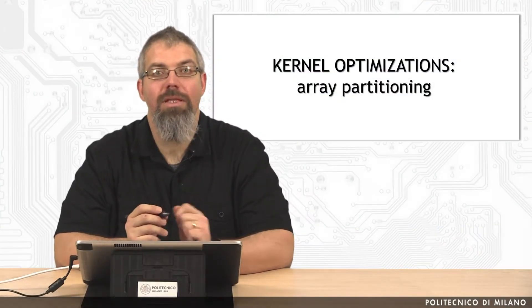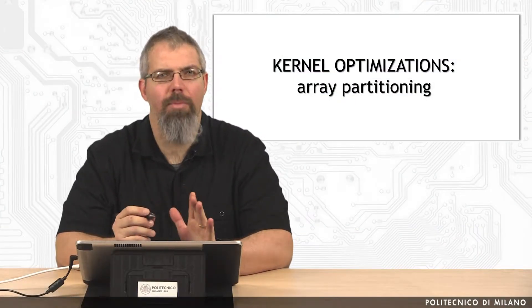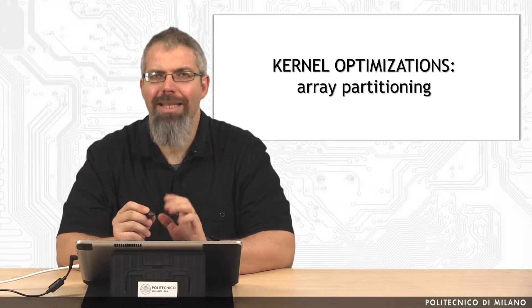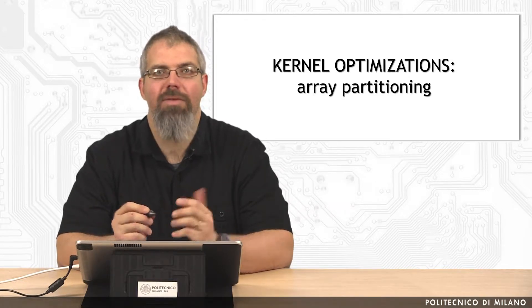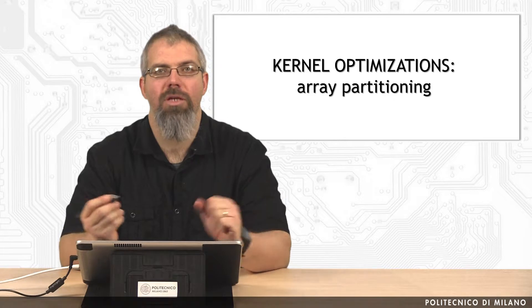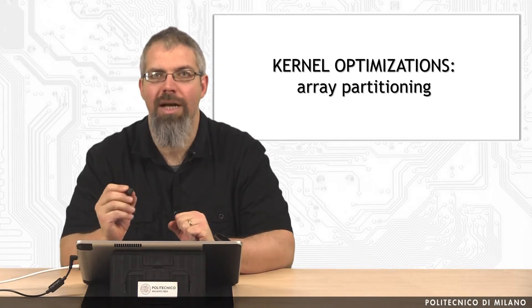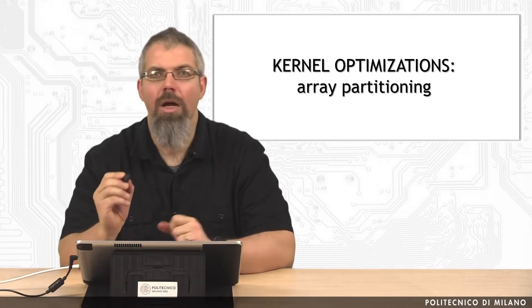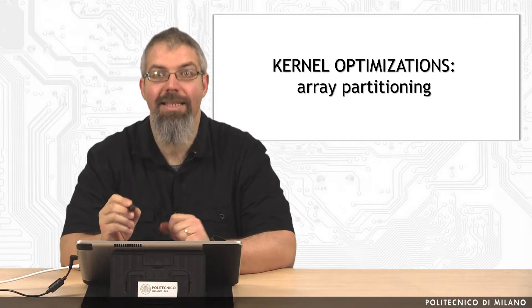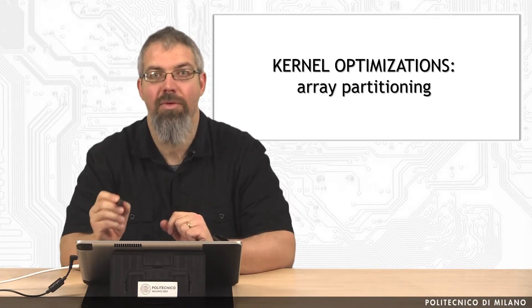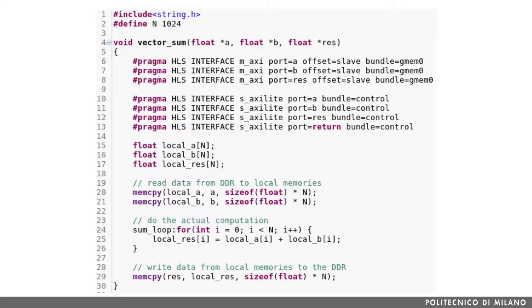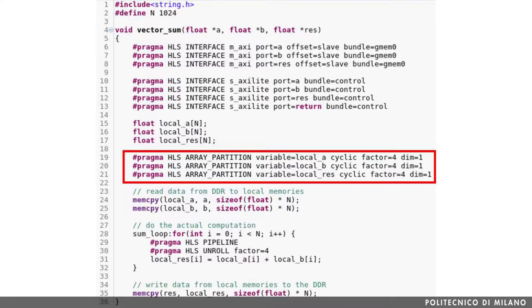In the previous class we did quite a good job in optimizing our code, but at the end of the day we asked ourselves if there wasn't a simpler way to achieve the same results without the need to rewrite such a large amount of code. The answer is yes, and it can be done because Vivado HLS provides the array partitioning pragma. Starting from our original code, where we applied loop unrolling and loop pipelining to the VectorSum loop, we simply add the following array partitioning pragmas.